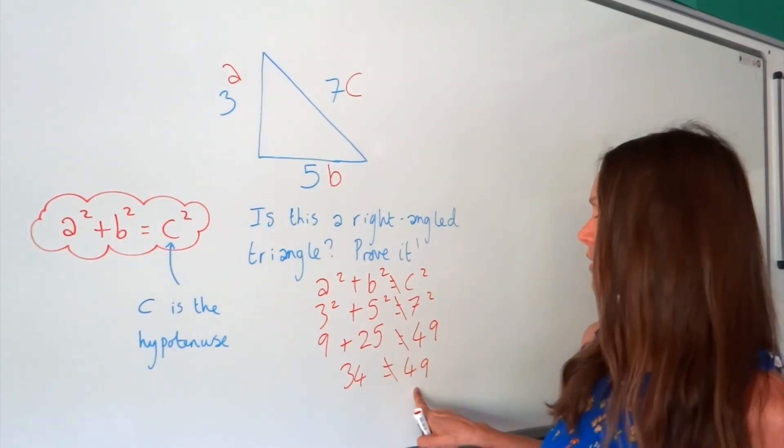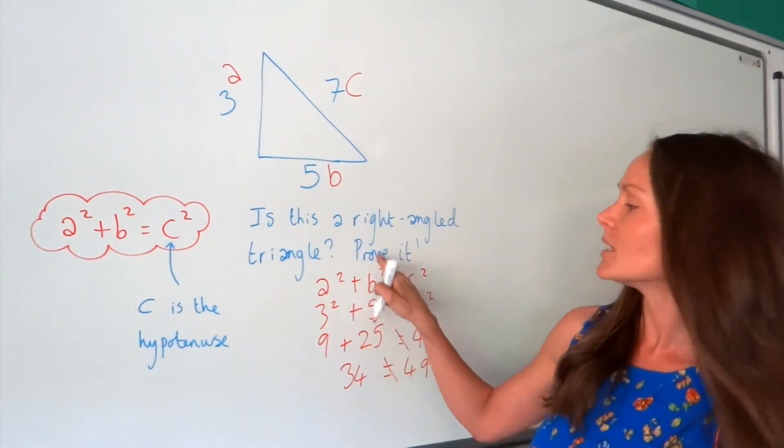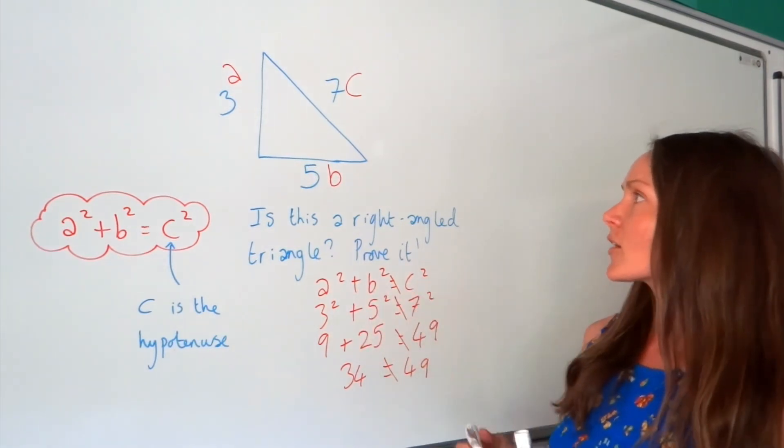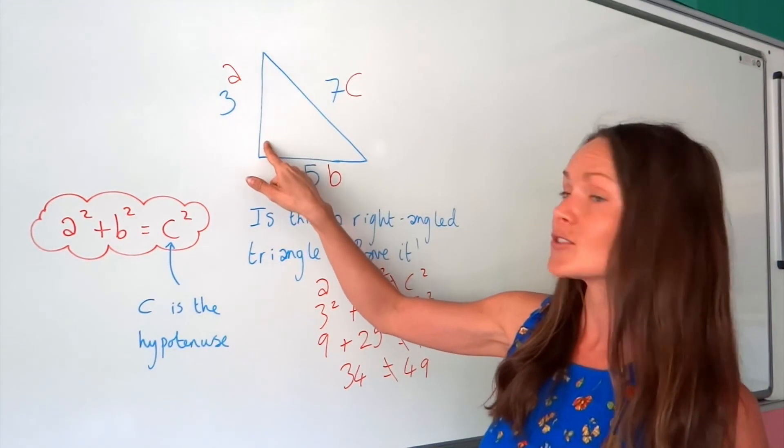It just means 34 is not equal to 49, which means A squared plus B squared does not equal C squared. Okay, so it failed. This is not a right angle.